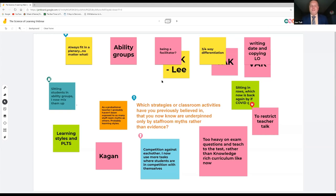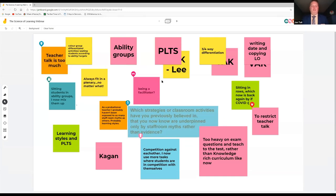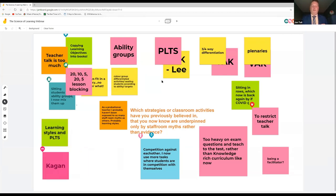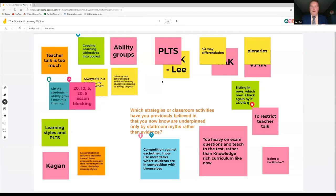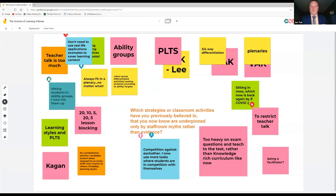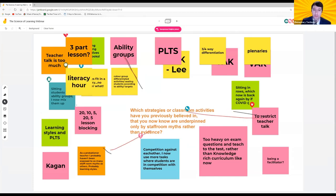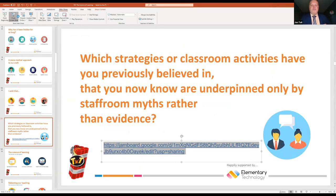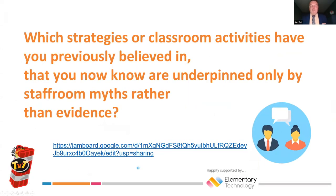Writing the date and copying the learning objective — I wrote a blog post on that, titling it '57 Hours Writing Learning Objectives', doing a rough estimate of three minutes per lesson times five lessons a day times 38 weeks a year — it's absolutely ridiculous. Three-part lessons just came up too — a blast from the past. Sitting in rows going in and out of fashion, three- or four-way differentiation, lesson blocking. Lots of great collaboration on there. We'll send the Jamboards out by email so you've got a copy.